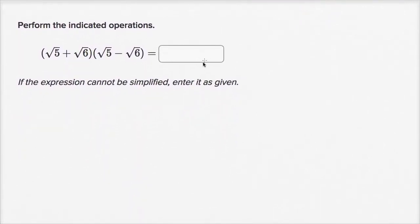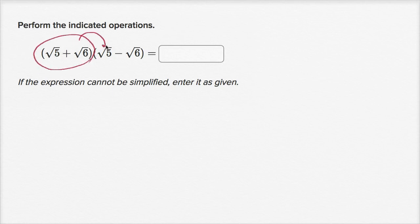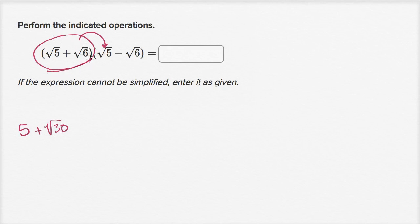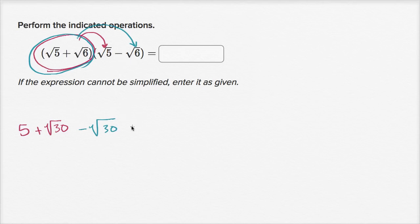Pause it and see if you can work it out on your own. Perform the indicated operations. So let's first multiply — this is essentially doing the distributive property twice. Let's distribute: multiply the square root of five plus the square root of six first times the square root of five. Square root of five times the square root of five is five. Square root of five times the square root of six is the square root of 30, giving us five plus the square root of 30. Then multiplying by the negative square root of six: negative square root of six times the square root of five is negative square root of 30, and negative square root of six times the square root of six is negative six.